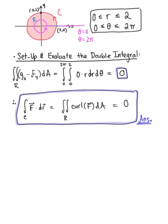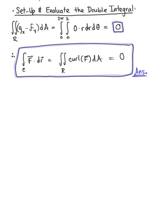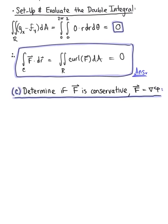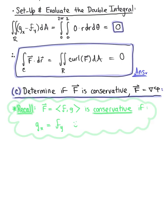For part C, we determine if the vector field is conservative. A two-dimensional vector field is conservative if the partial derivative of g with respect to x equals the partial derivative of f with respect to y. From part A, both partial derivatives equal 0, so these conditions are satisfied, and yes — the vector field F is conservative.